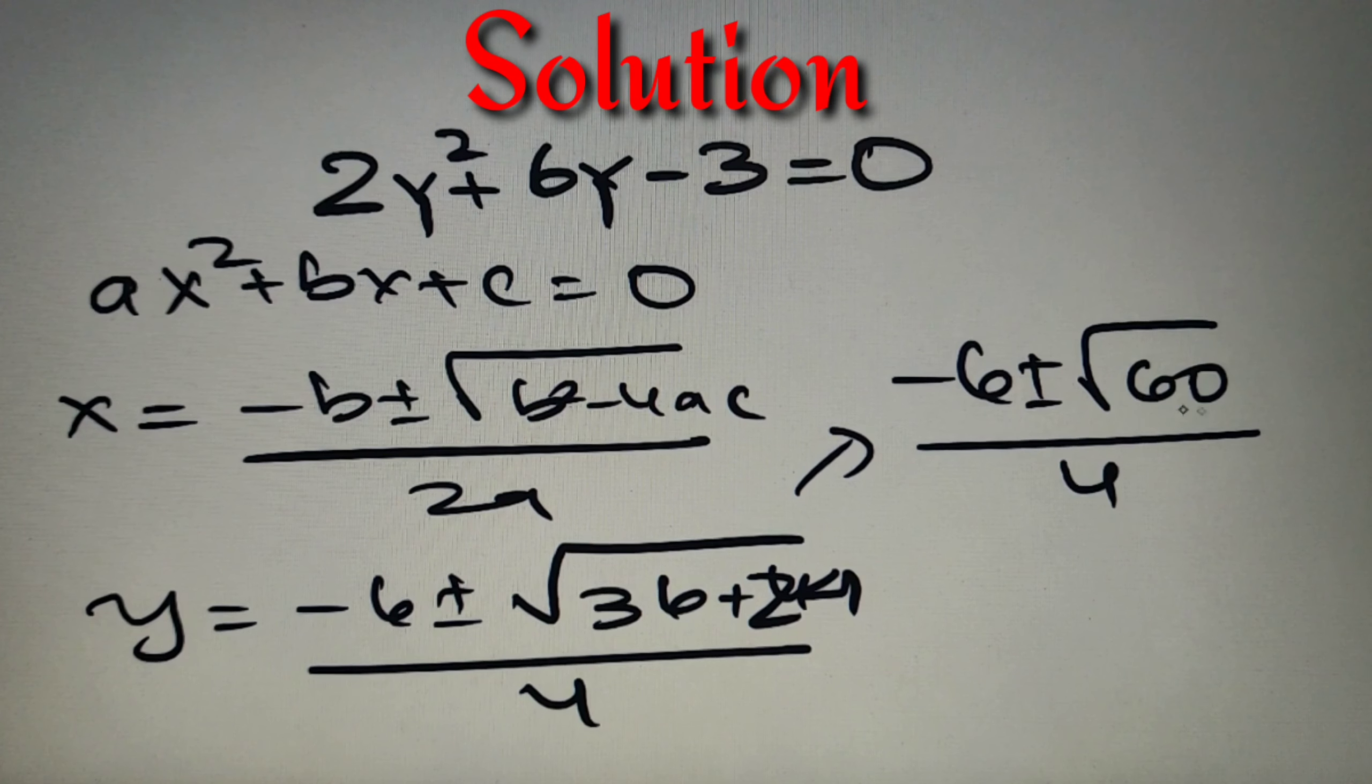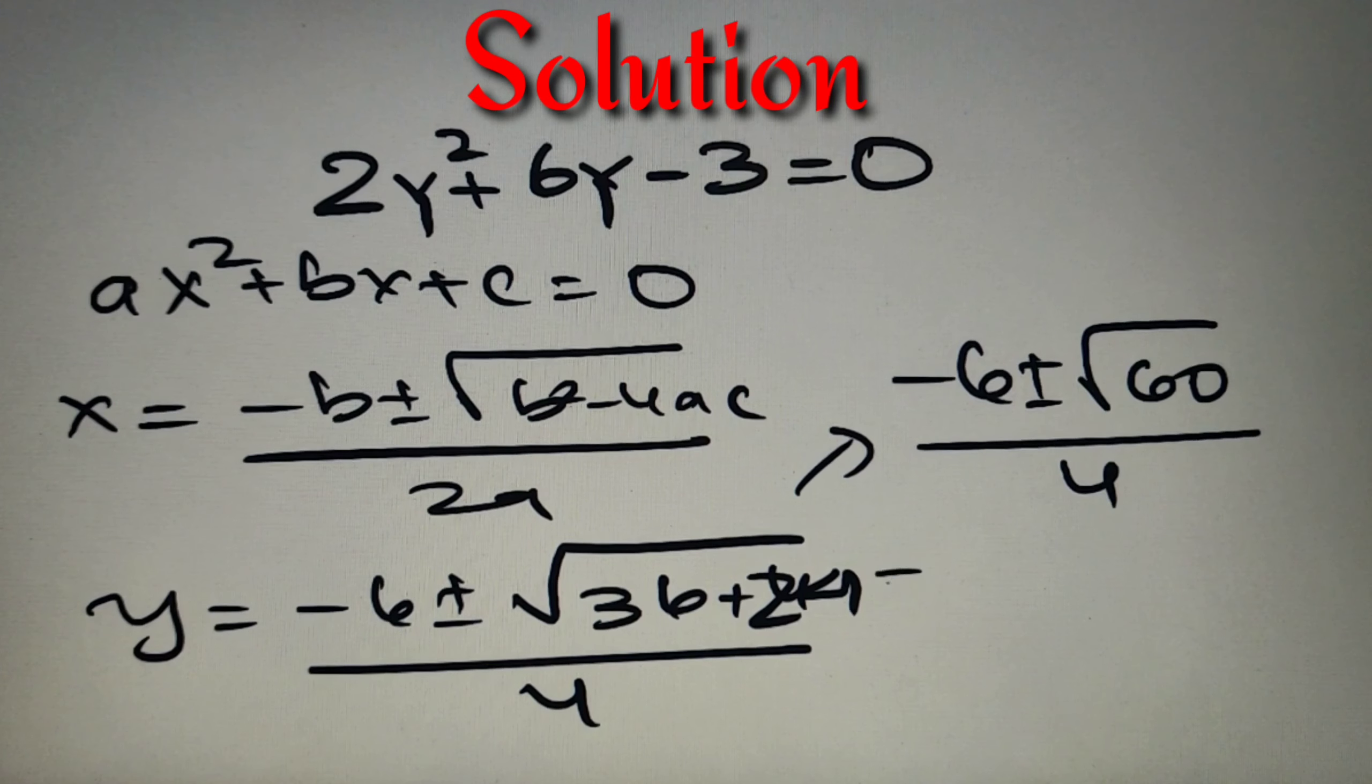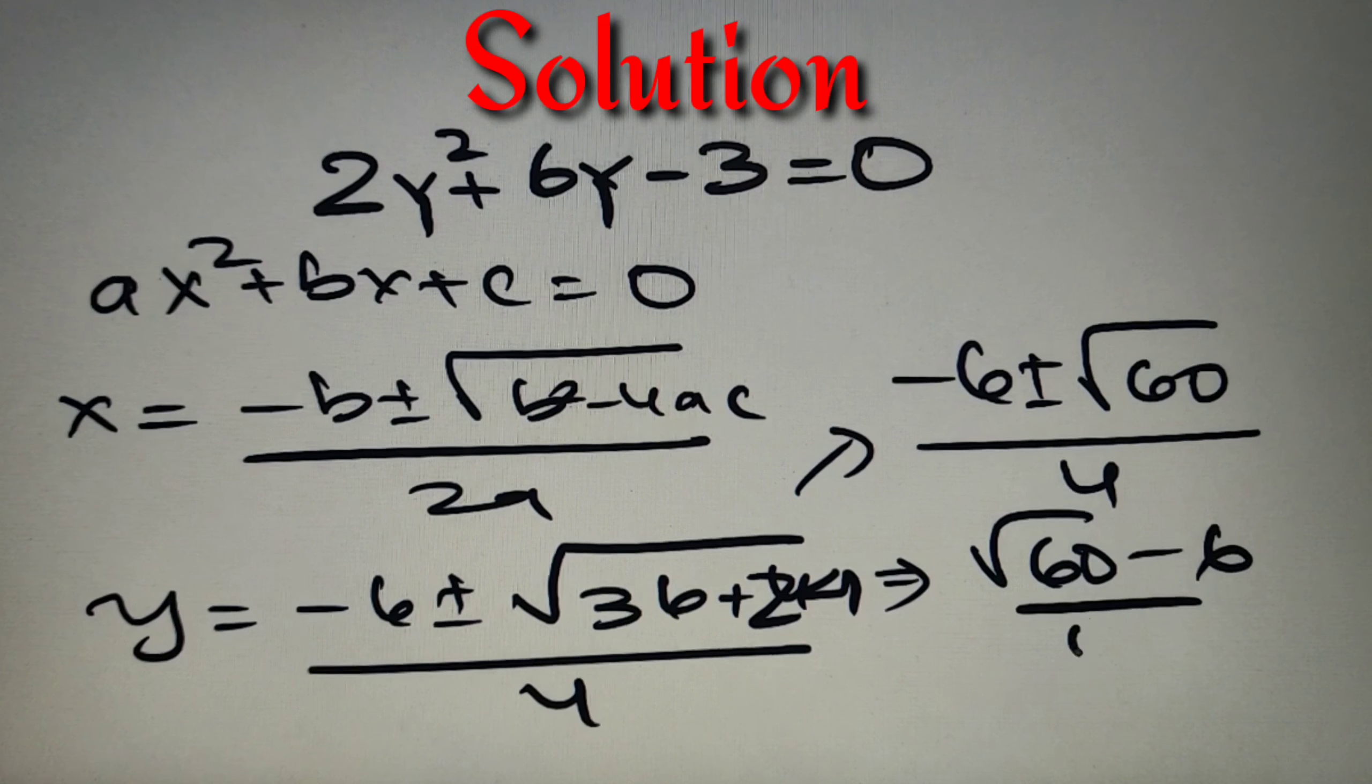Now we will neglect the value minus 6 minus root 60 by 4 because we are adding positive numbers and we cannot get a negative value by it. So our final answer is equal to root 60 minus 6 whole divided by 4.